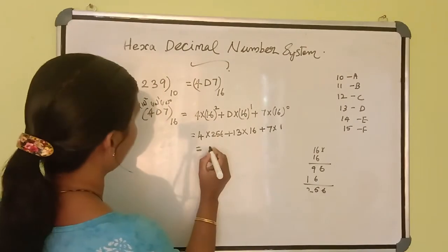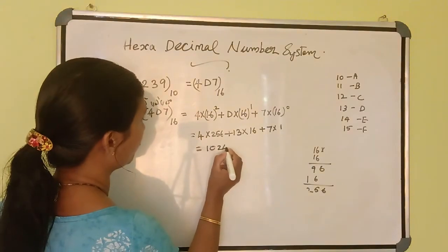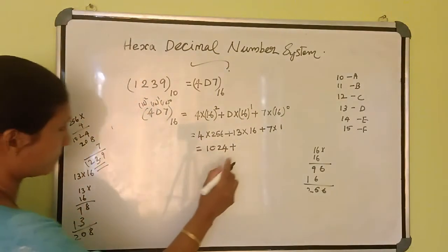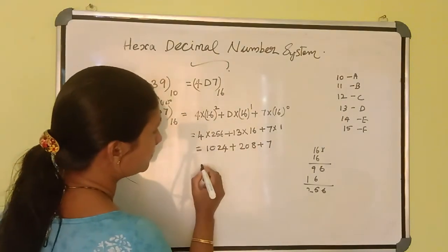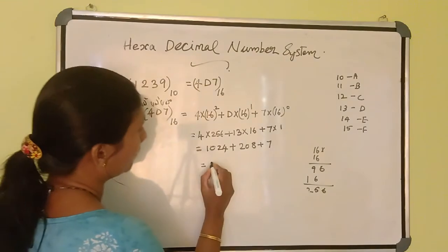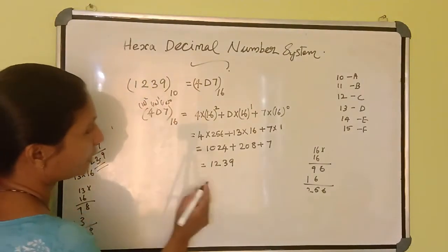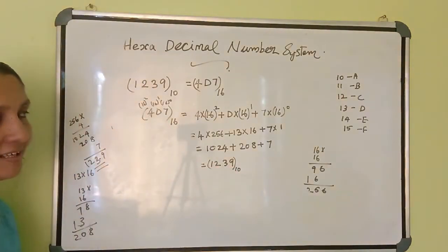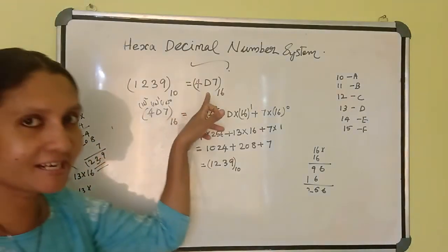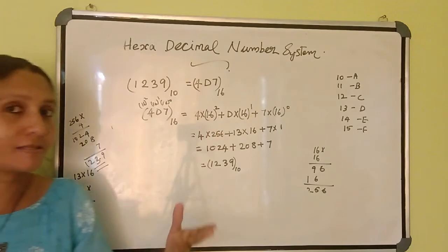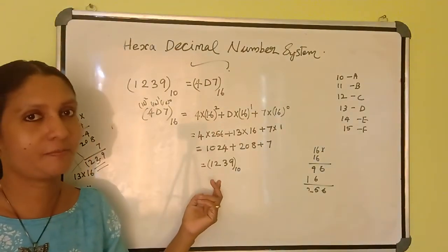I will write 4 into 16 squared, which means 16 into 16, and you get 256. So 4 into 256, plus — instead of D, I will write 13, because the equivalent decimal number of D is 13 — so 13 into 16, plus 7 into 1. That gives 1024 plus 208 plus 7. When you add these numbers, you finally get 1239. That means you got the same equivalent decimal number back. When you divide by 16 you get the hexadecimal, and when you multiply by powers of 16 you get the decimal again.